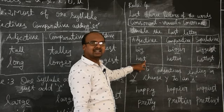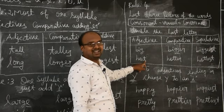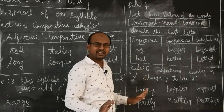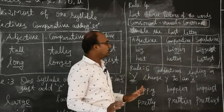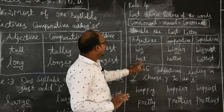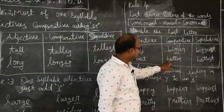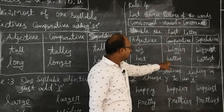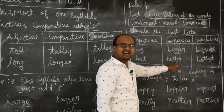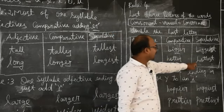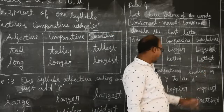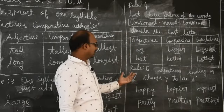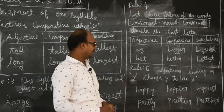Another example: 'hot.' First letter H — consonant. Second letter O — vowel. Third letter T — consonant. Consonant-vowel-consonant pattern. So we double the last letter T: H-O-T-T-E-R — 'hotter.' Superlative: 'hottest.'